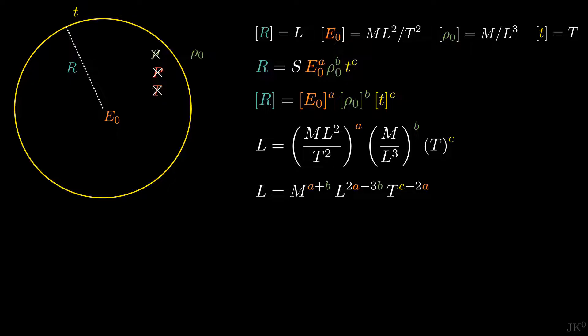Finally, we impose the right hand side to have dimensions of length, to be consistent with the left hand side. For this we need the exponents of mass and time to be zero, and the exponent of length to be 1, which implies a set of three equations for the three unknown exponents. This is called a system of three linear equations for three unknowns, which means that the system has a unique solution. Here I invite you to solve this system, and find the solution. It is a quick and fun exercise.